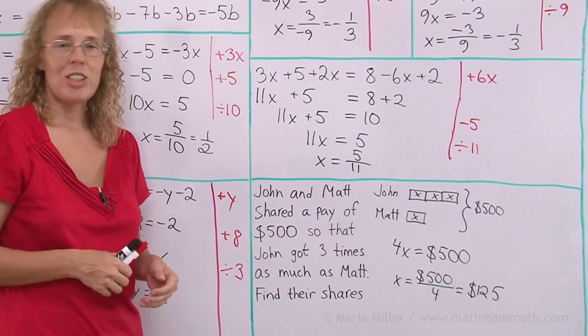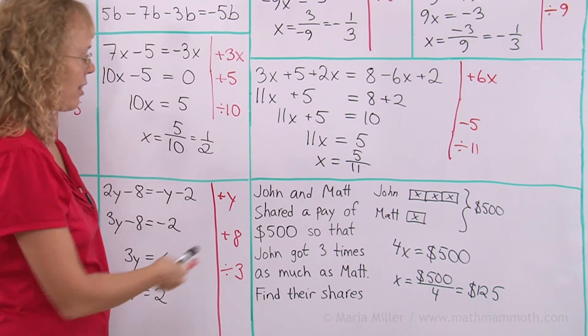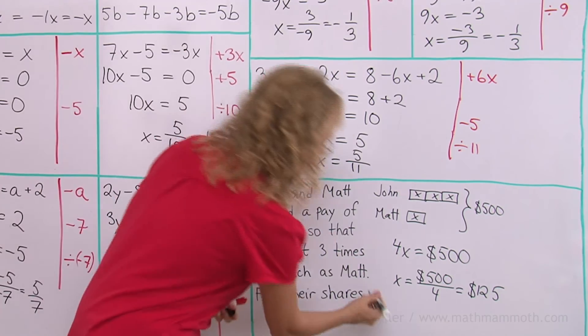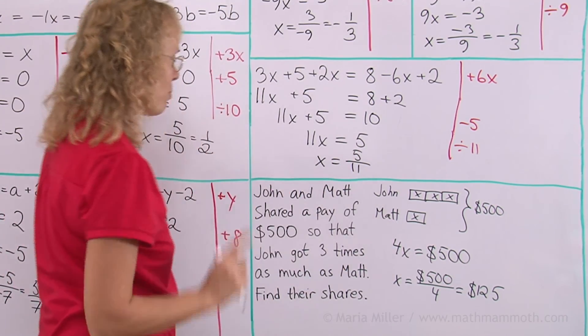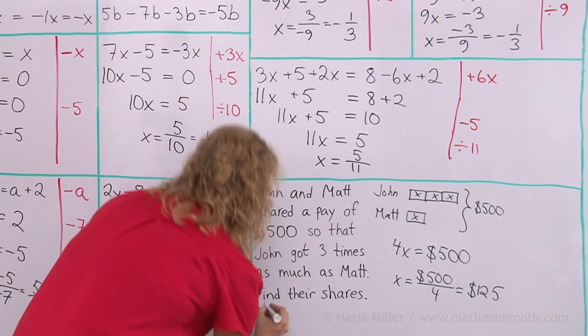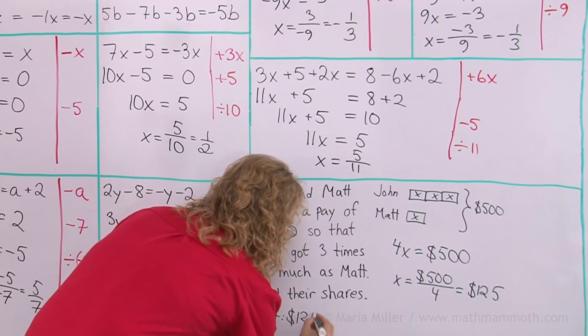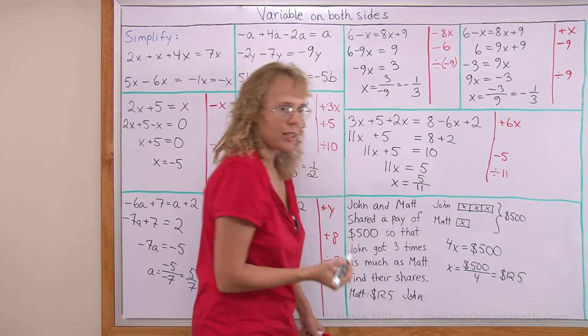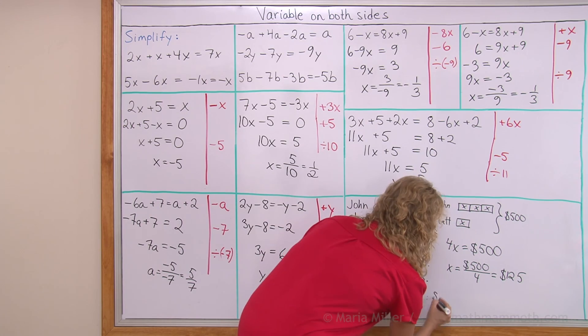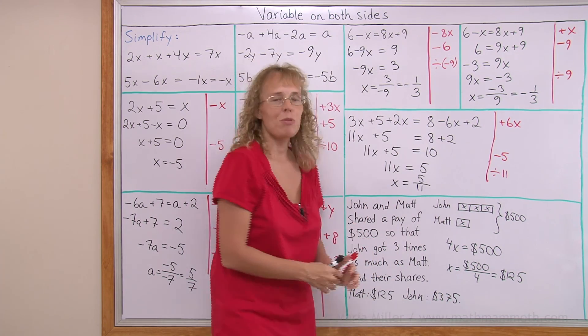But my problem is not asking for x. It's not asking find x, right? It's asking find their shares. And x happens to be how much Matt gets. Matt gets $125. John gets three times as much, $375. We're all done with this and I hope it was helpful.